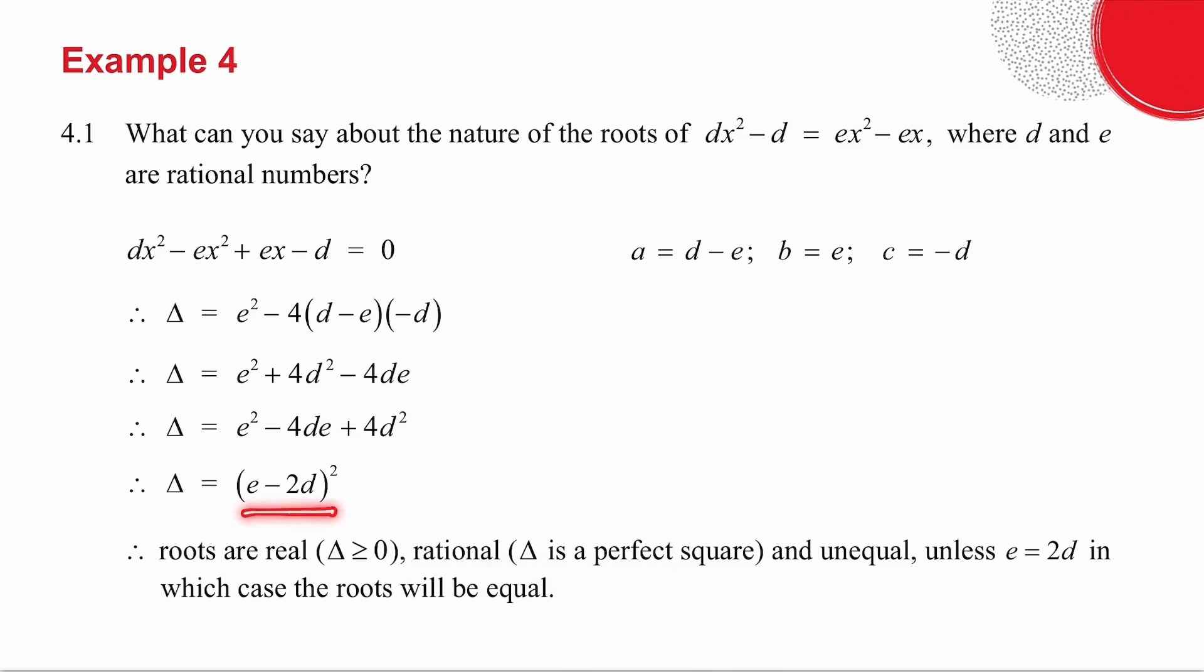Is this equal to 0? Well, now I've just got to be careful. If e and 2d are equal, then delta is equal to 0. So if e is equal to 2d, then my roots will be equal. However, if e is not equal to 2d, then my roots will be unequal.